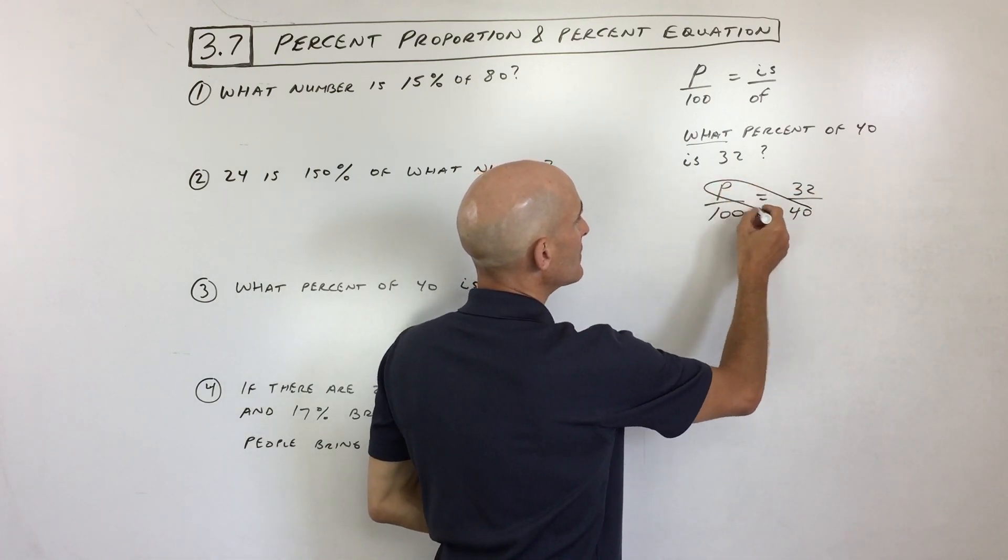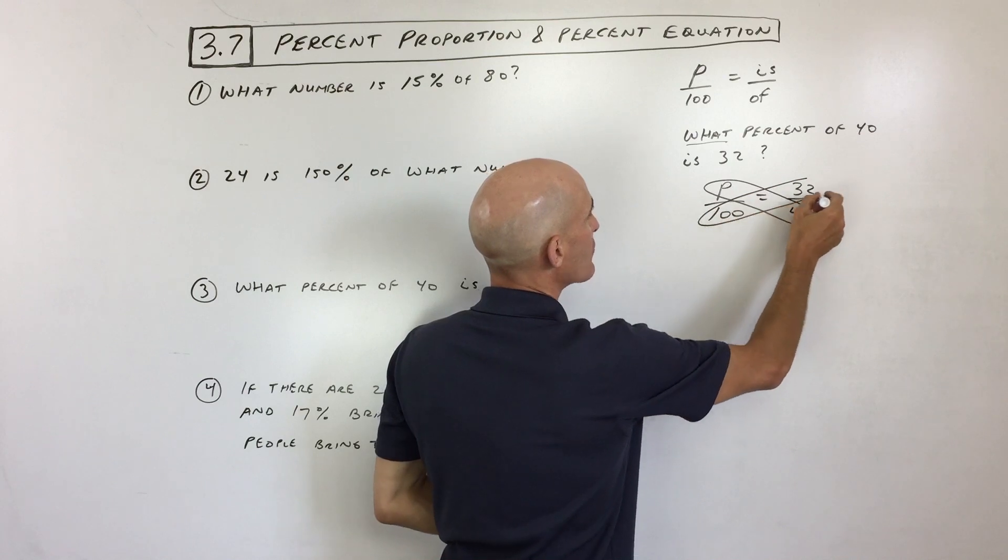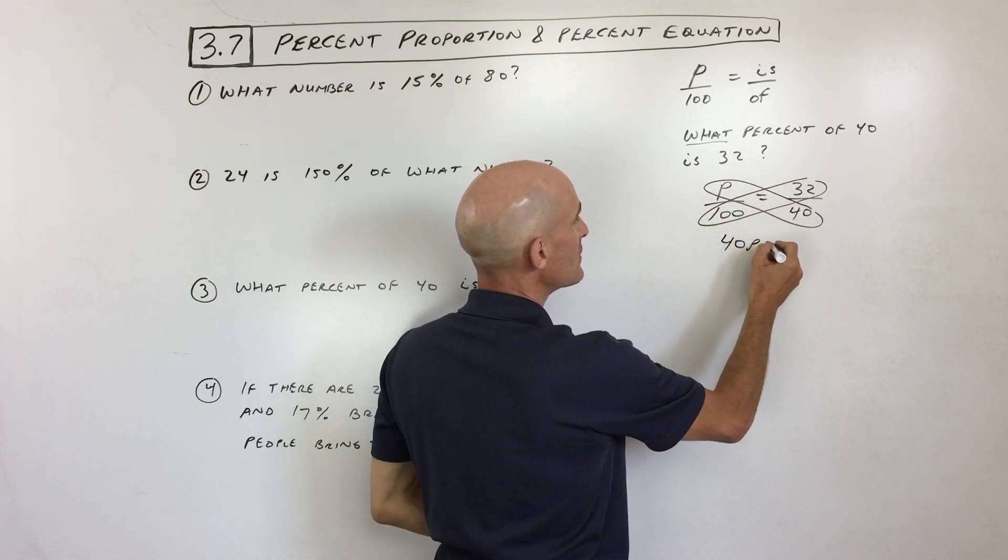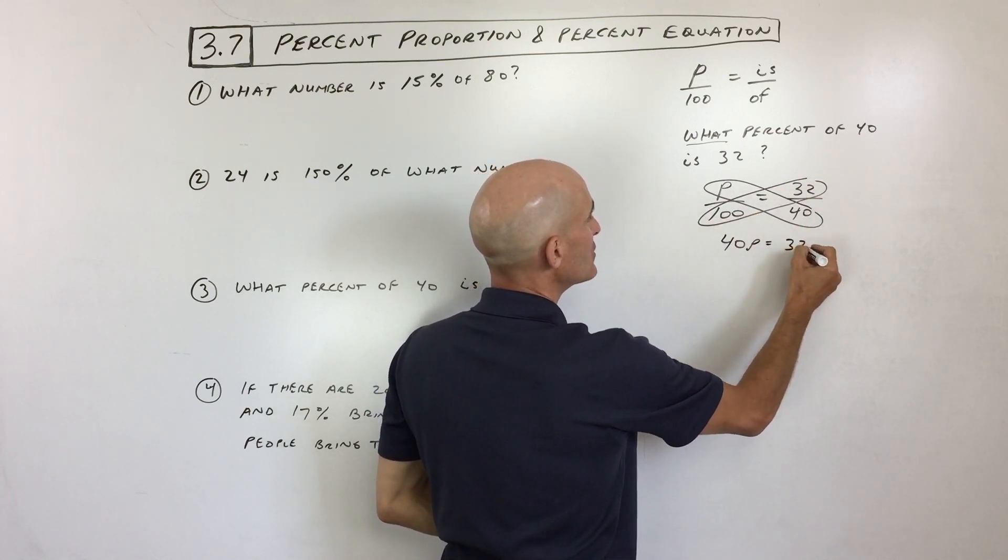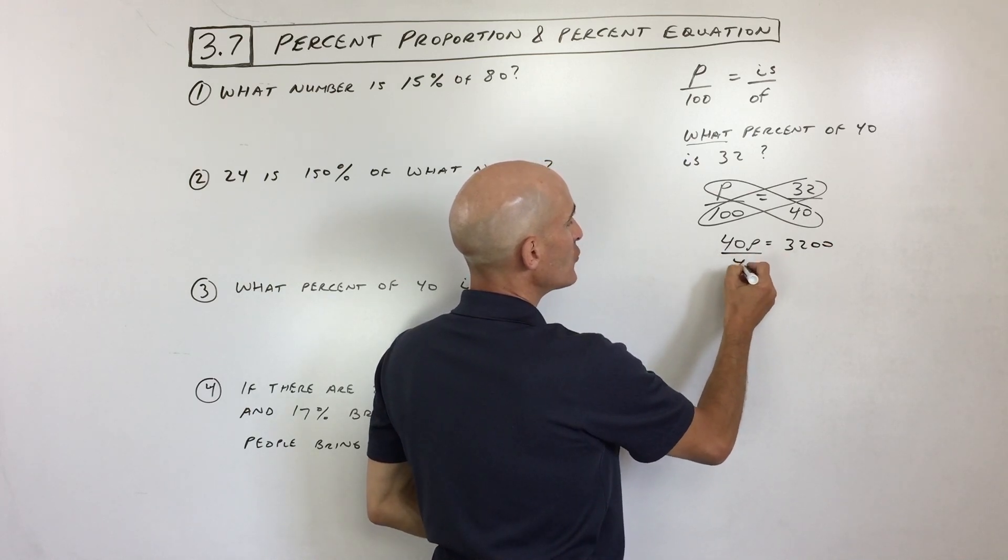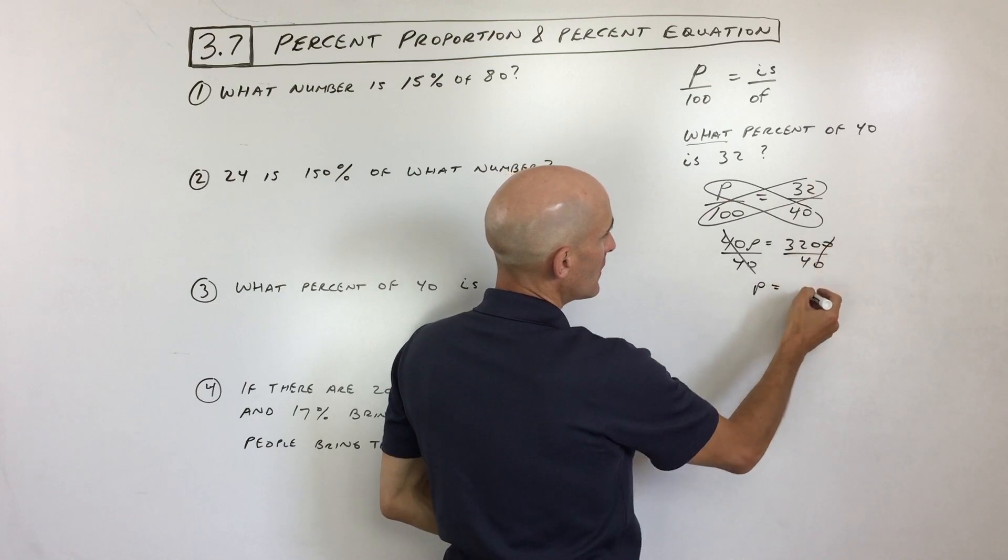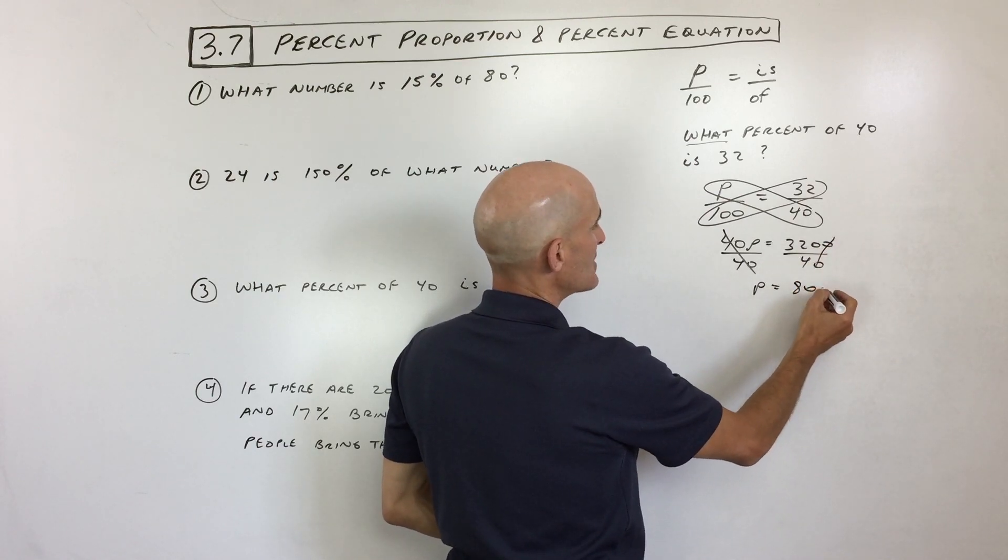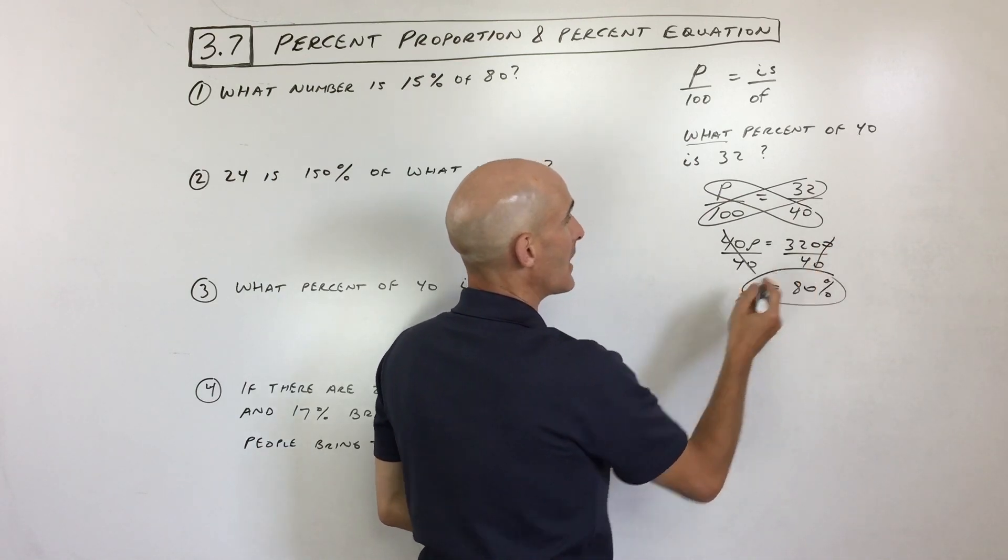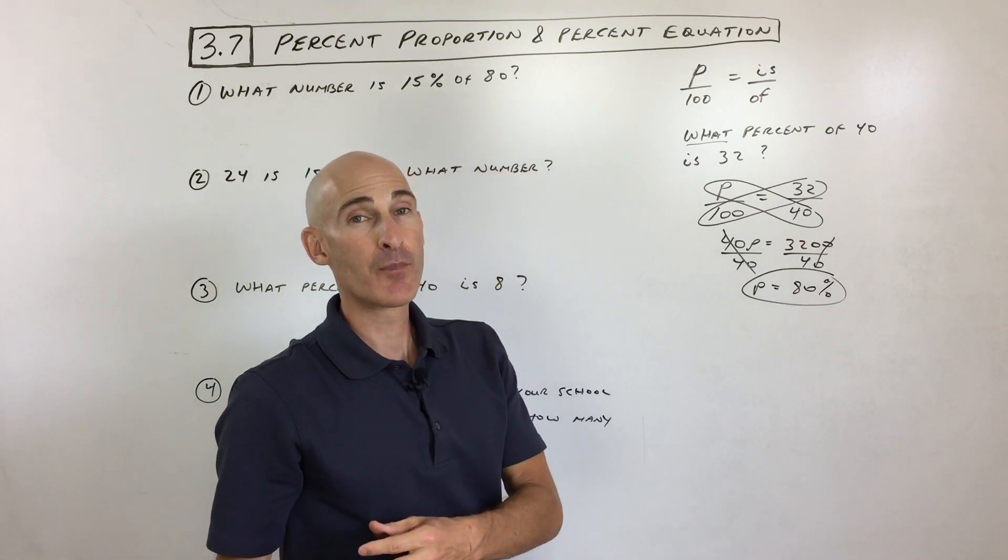Now, remember, we learned about this in the last lesson with the cross products. We can cross multiply. That's 40P equals 3200. Then all we have to do is do the opposite of multiplying by 40, divide by 40. And that comes out to, let's see, that's 80. So that means it's going to be 80%. So that's the proportion way of solving it.